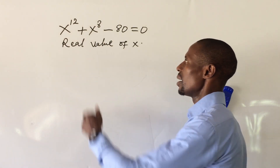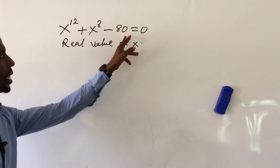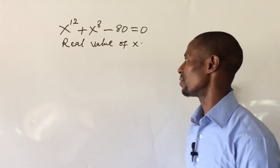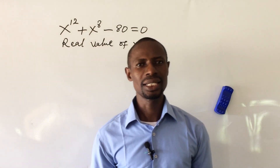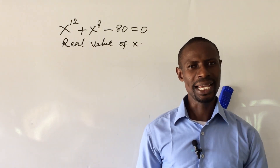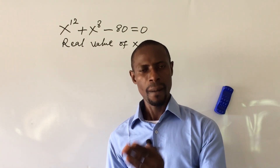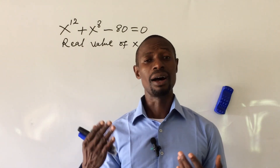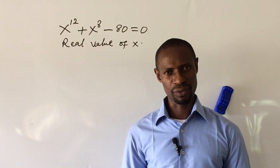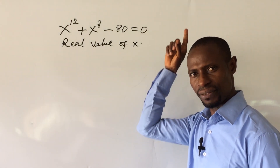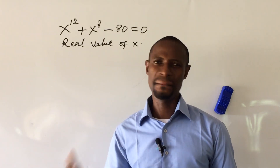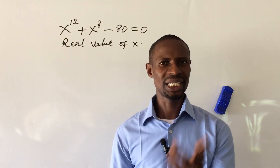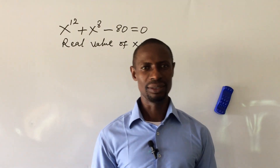The question is: x to the power of 12 plus x to the power of 8 minus 80 equals zero. Find the real value of x. Now if you look at this equation, this is a 12th-degree polynomial equation — it has 12 roots — but we are asked to solve for only the real root in this challenge. I have a separate video on the 12th-degree polynomial where I solve for all 12 roots, including both real and imaginary roots.